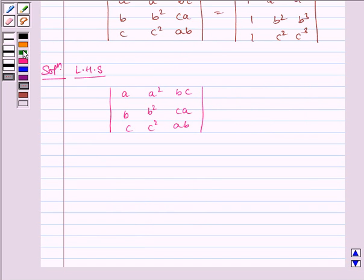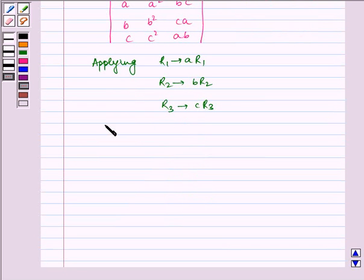Now from here, applying row operations. So applying R1 tends to A R1, R2 tends to B R2 and R3 tends to C R3.